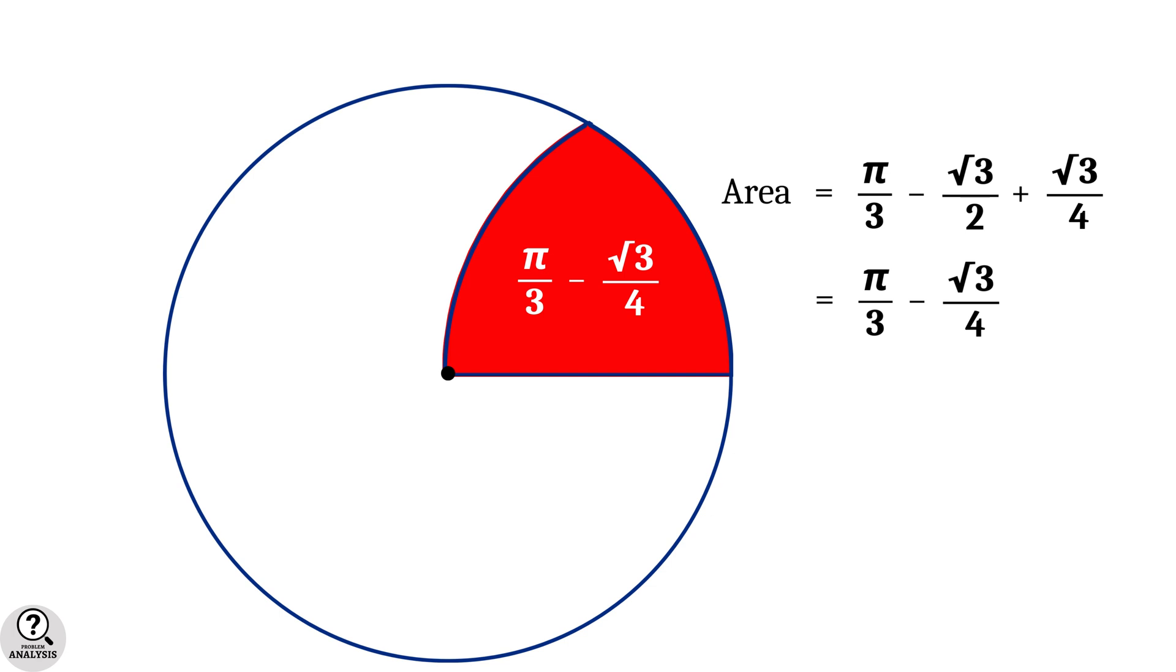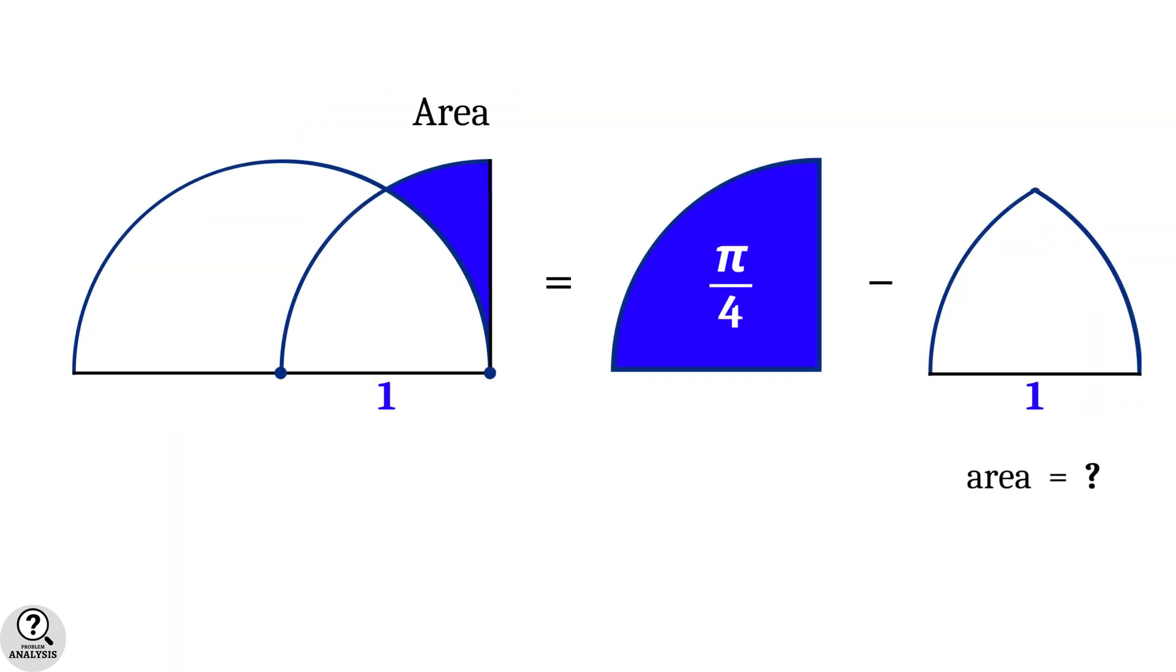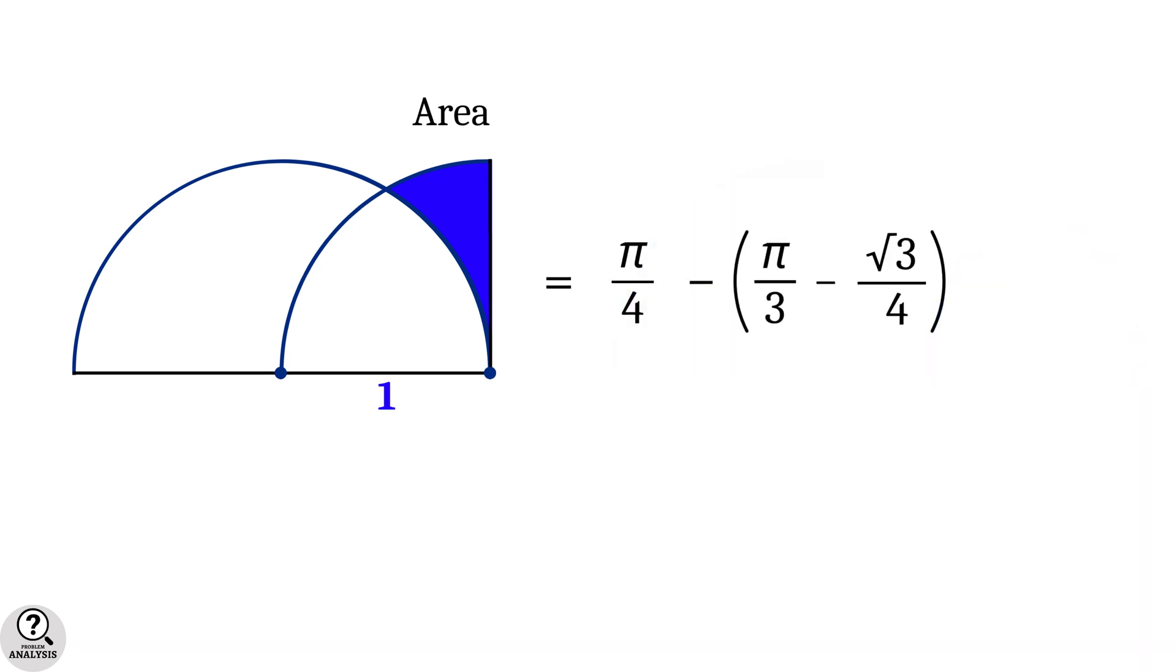We are almost done. As we told earlier, area of the left hand side is equal to pi by 4 minus area of this curved triangle, which we got pi by 3 minus root 3 by 4. After simplification we will get, the area is equal to root 3 by 4 minus pi by 12 square units.